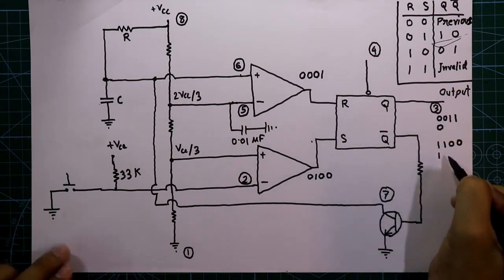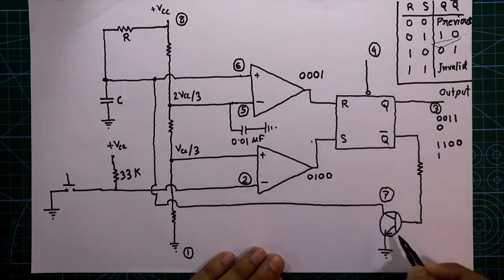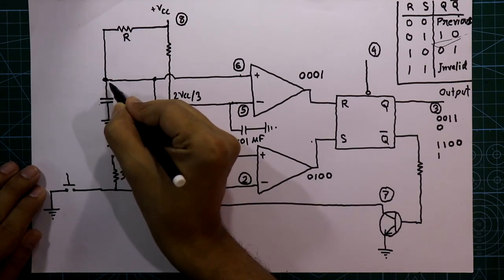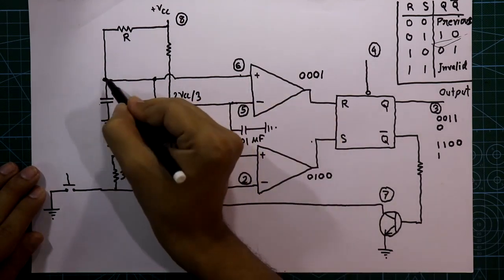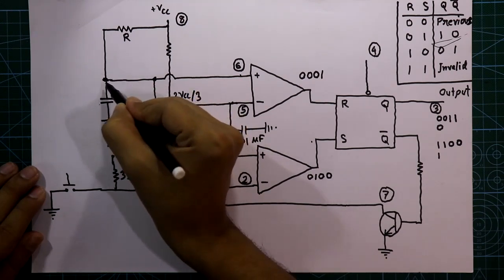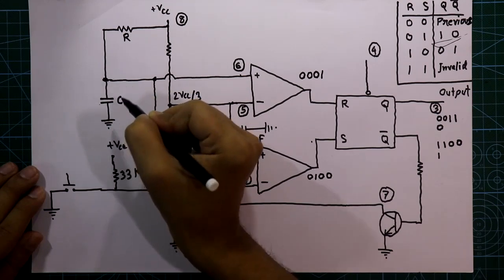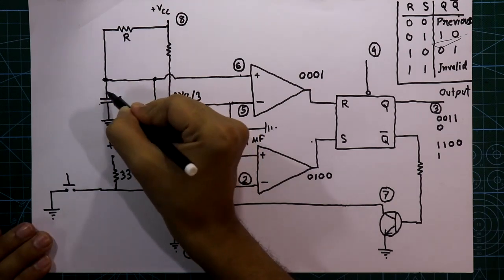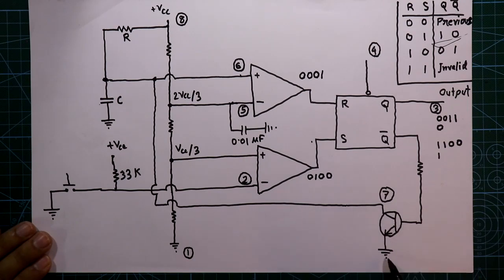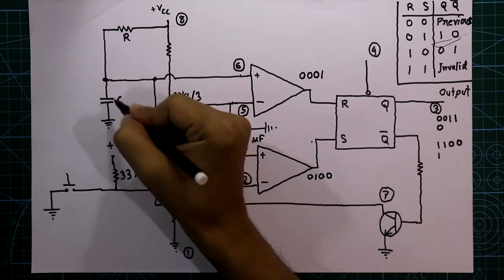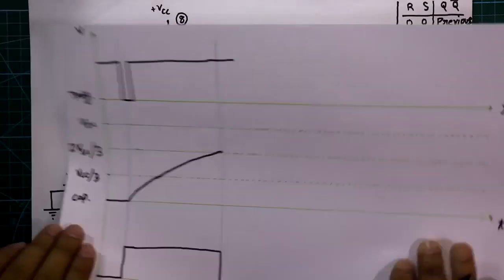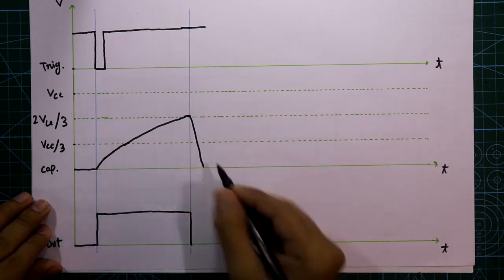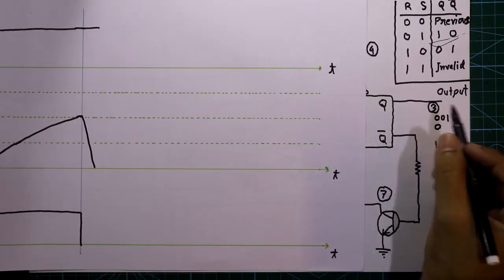With Q-bar now equal to one, the transistor switches back to a closed circuit. Pin seven is connected to ground again, and since pin six is tied to pin seven, this point is also grounded. The capacitor rapidly discharges through this path to ground, causing a sudden drop in the capacitor voltage back to zero. The output is zero.